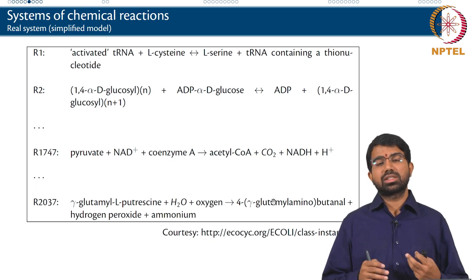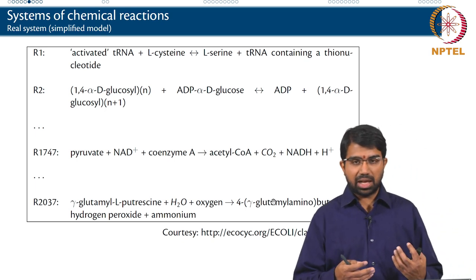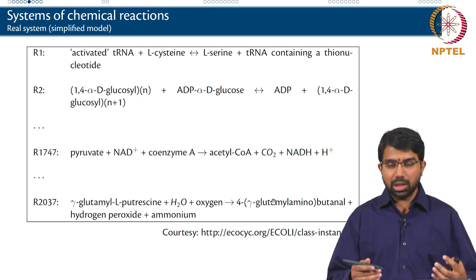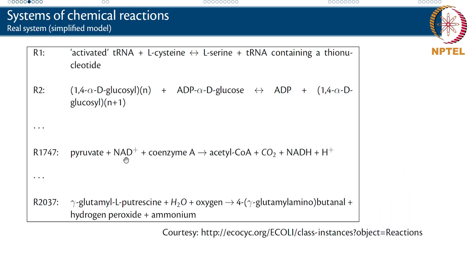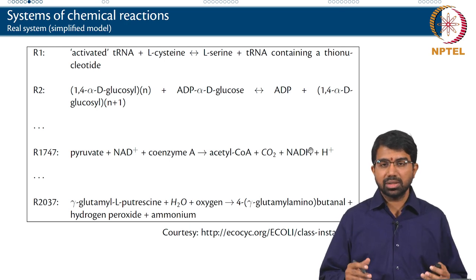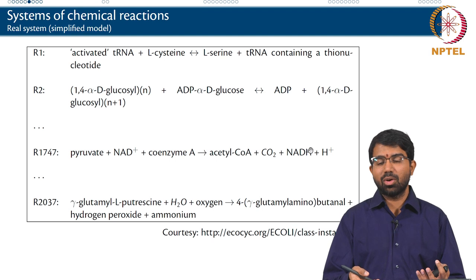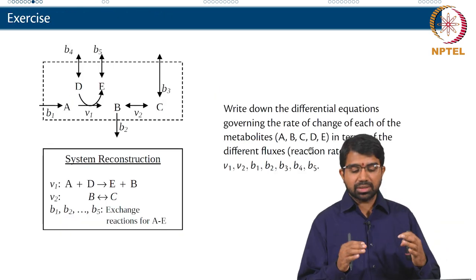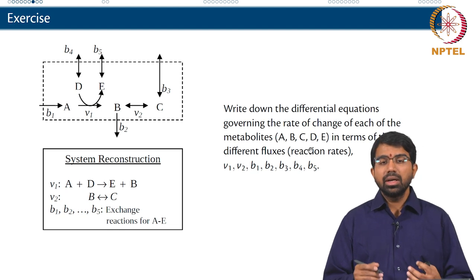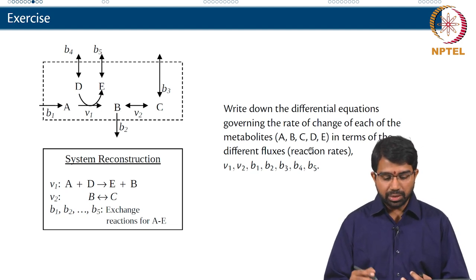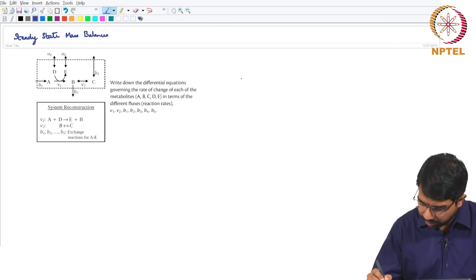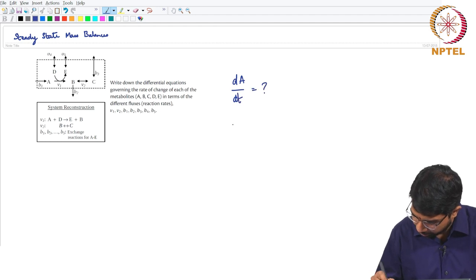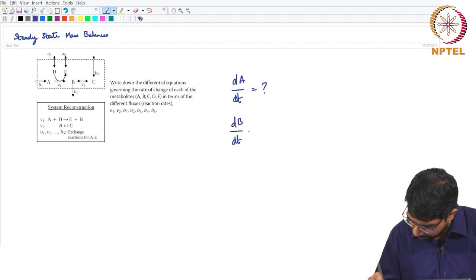If you were to model a cell, you would write it as a long linear set of reactions — an alphabetical list going from activated tRNA plus L-cysteine all the way through, including the tricarboxylic acid cycle reactions. A modeler works with this long system of reactions and wants to write a mass balance or material balance for it. So let us take a very simple system and write down the equations governing the rate of change of each metabolite — what is dA/dt, what is dB/dt, and so on.